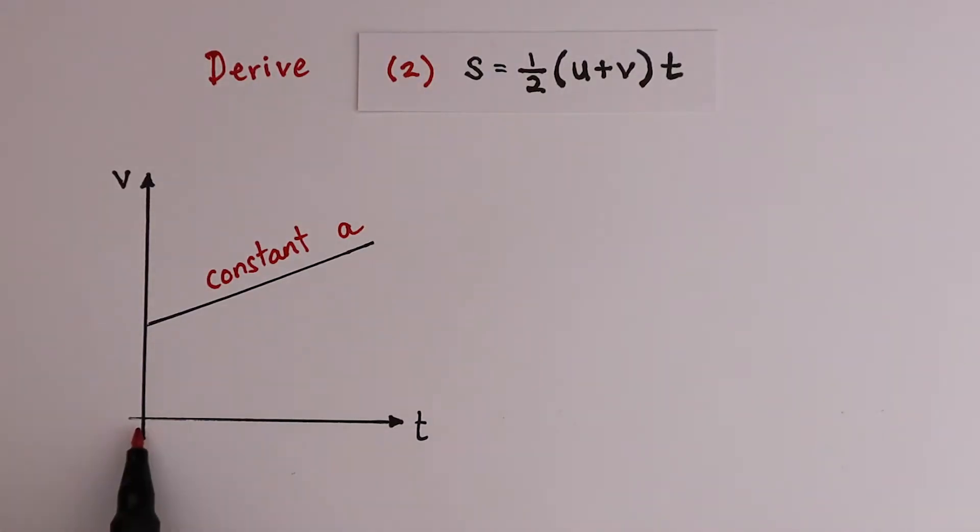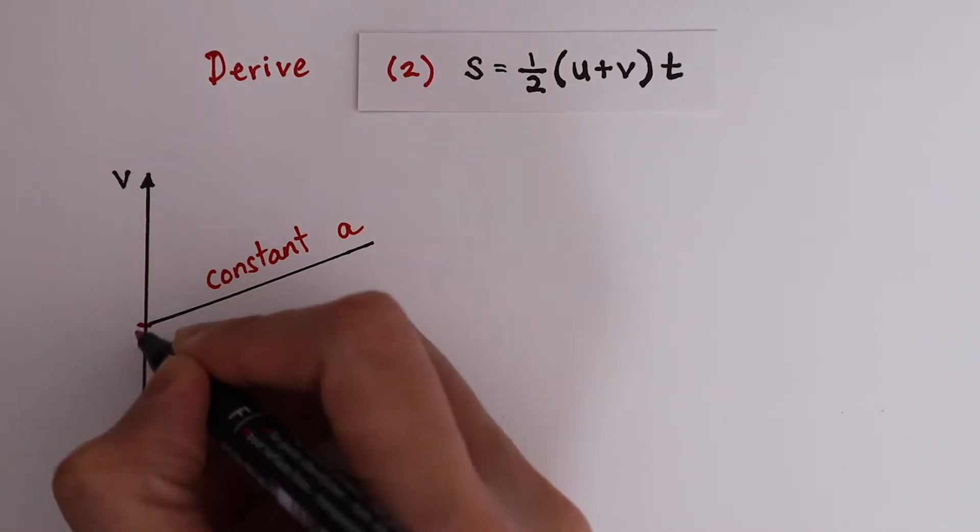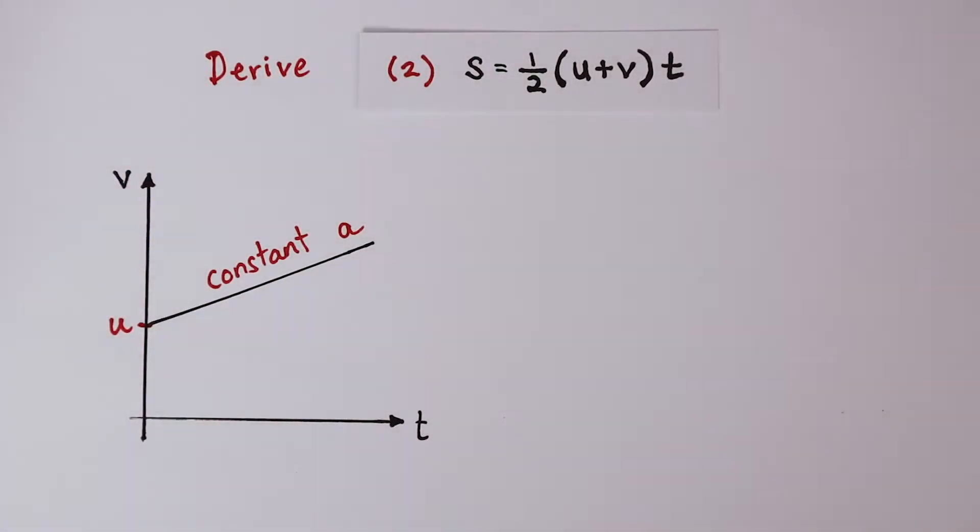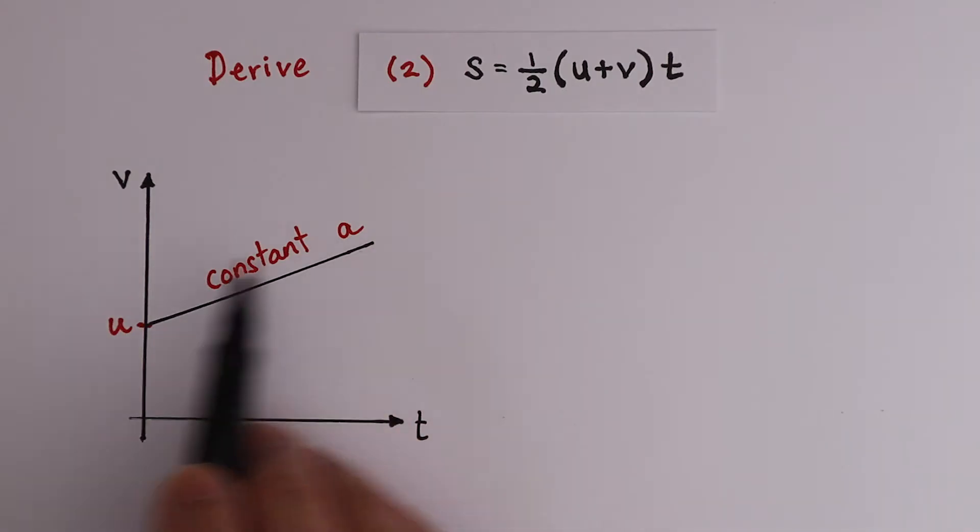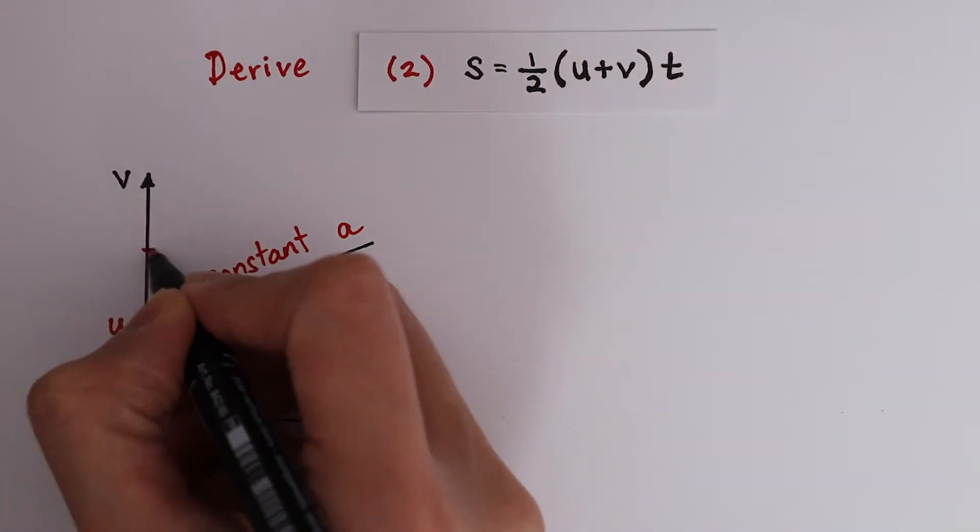At time equals 0, this object is already traveling with an initial velocity. Let the initial velocity be u. At the end of the journey, it travels at a final velocity.